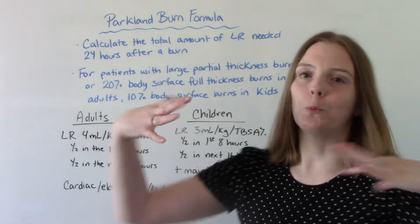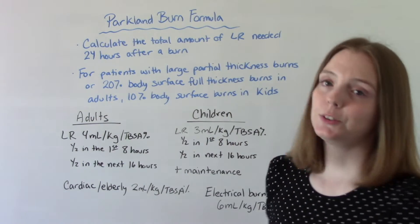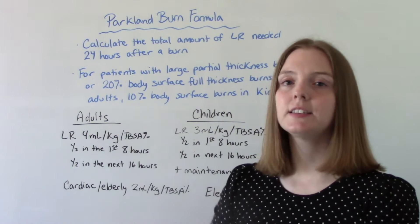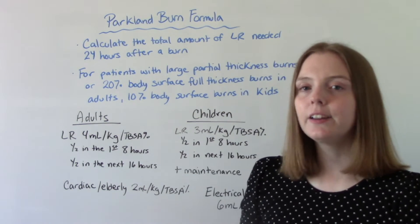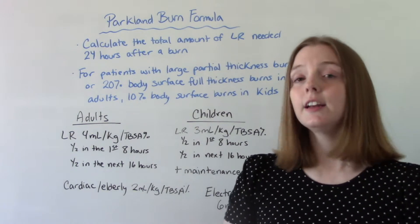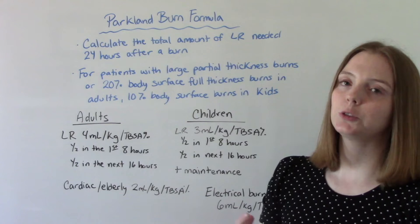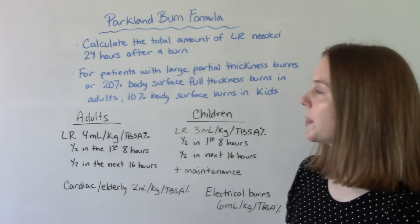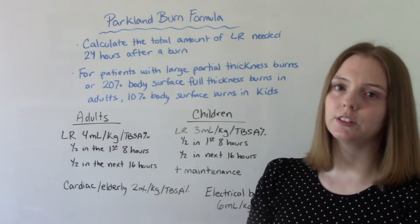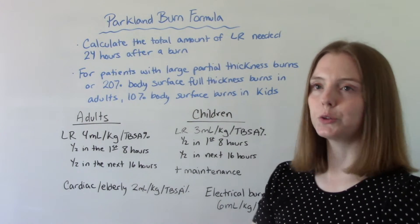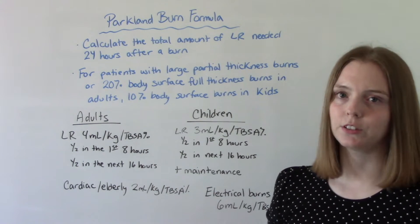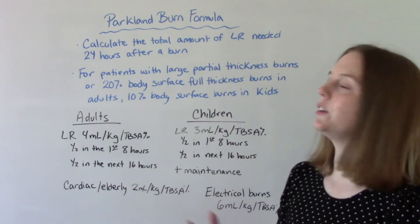So what is it and what is it used for? This is used to calculate the total amount of fluid replacement, typically lactated ringers, that is needed within the first 24 hours after a burn. This is used for patients who have large partial thickness burns or 20 percent of their body surface full thickness burns — that's for adults. For children who have smaller bodies, it's 10 percent body surface full thickness burns. So these are the patients that we're going to use this for.